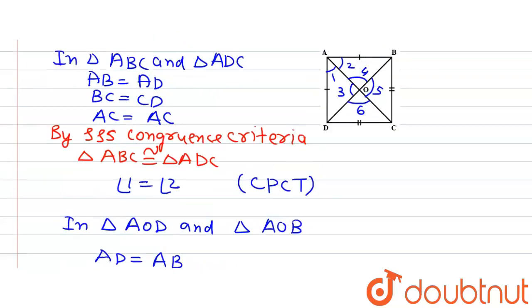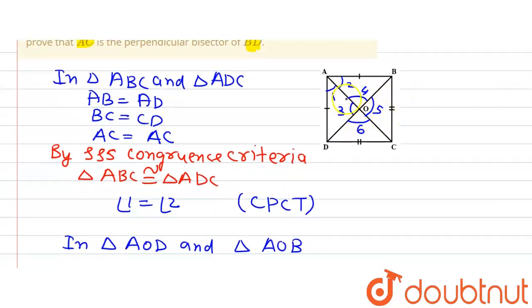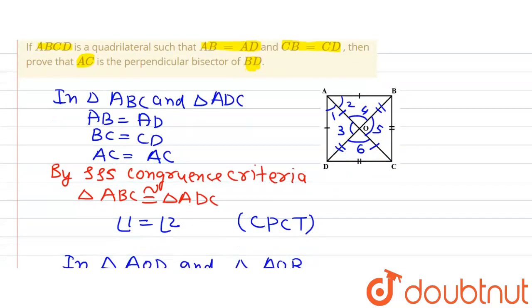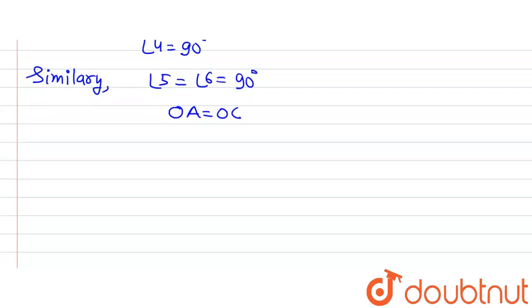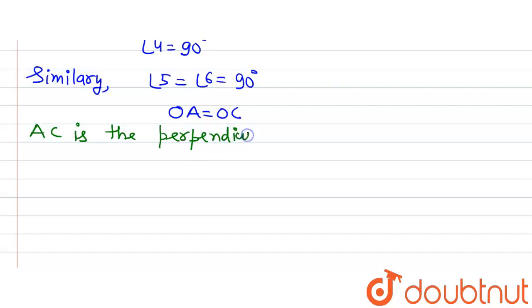This proves that lines AC and BD bisect each other and are also perpendicular to each other, since OD equals OB, OA equals OC, and all angles — angle 3, angle 4, angle 5 and angle 6 — are 90 degrees. Hence, AC is the perpendicular bisector of BD, which is what we were required to prove. Hence proved.